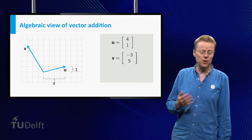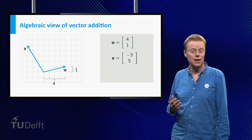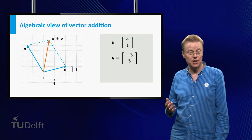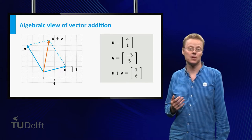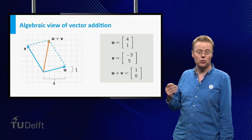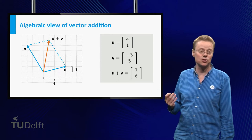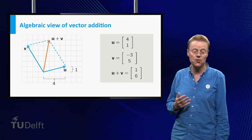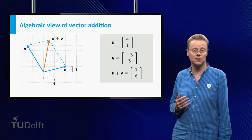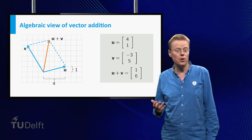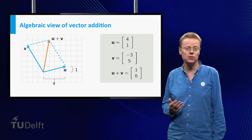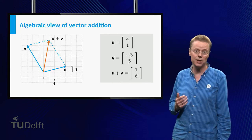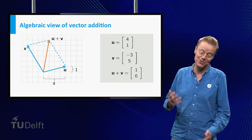Geometrically, we see that u plus v starts at the origin and ends at (1, 6). The representation of this sum vector is (1, 6). Note that the first component 1 of the sum vector u plus v is simply the sum of the first components 4 and −3 of the vectors u and v. Similarly, the second component 6 of the sum vector u plus v is just the sum of the second components 1 and 5 of the vectors u and v.